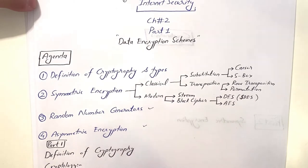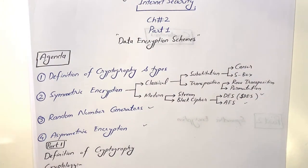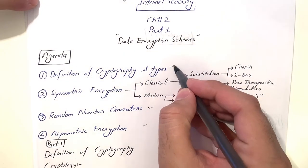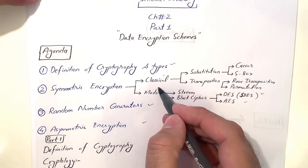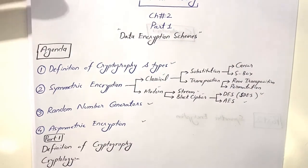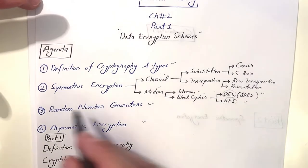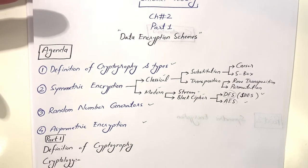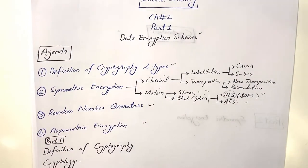Random number generators and asymmetric encryption will be discussed in part two, along with DES and AES. Today we will cover: definition of cryptography and types of cryptography, then symmetric encryption classical and modern techniques, including stream cipher and block cipher. I will try to cover at least up to block cipher, and we will discuss the rest in the next part if time permits.